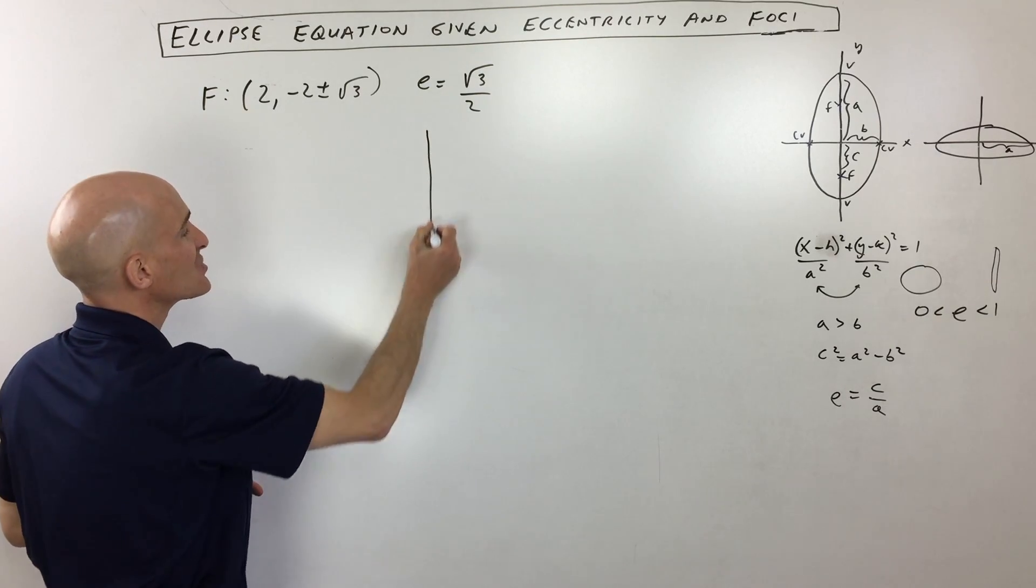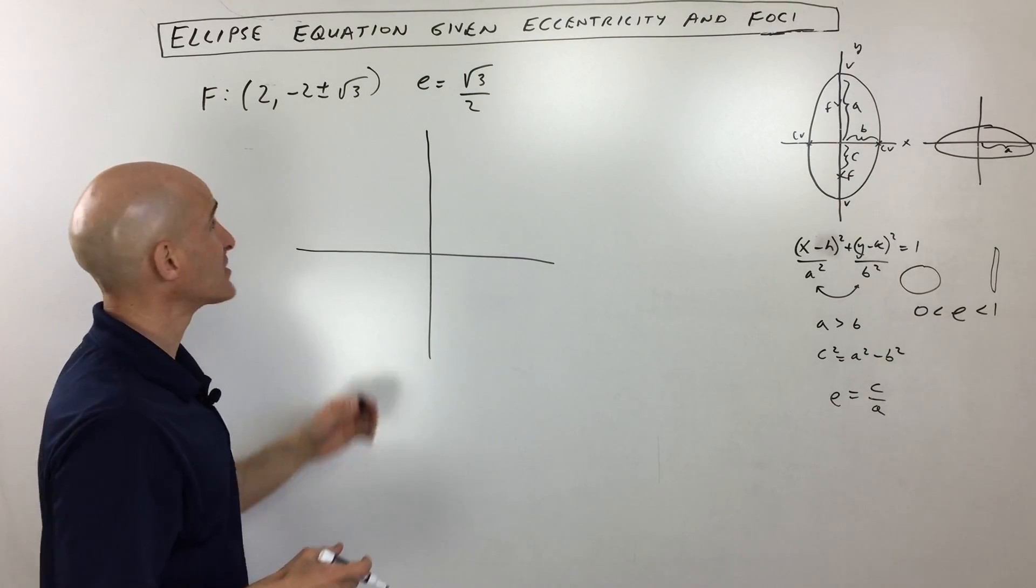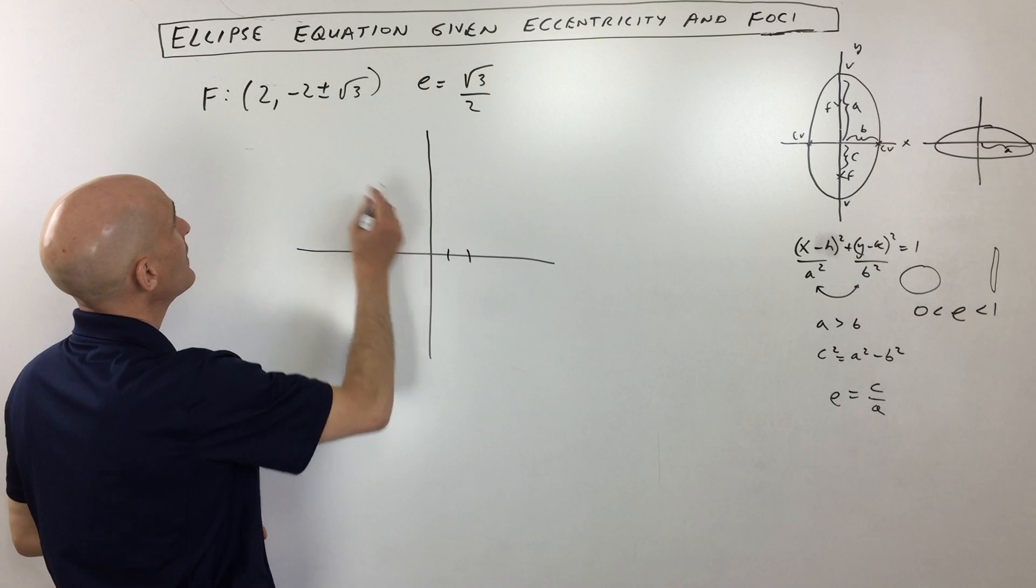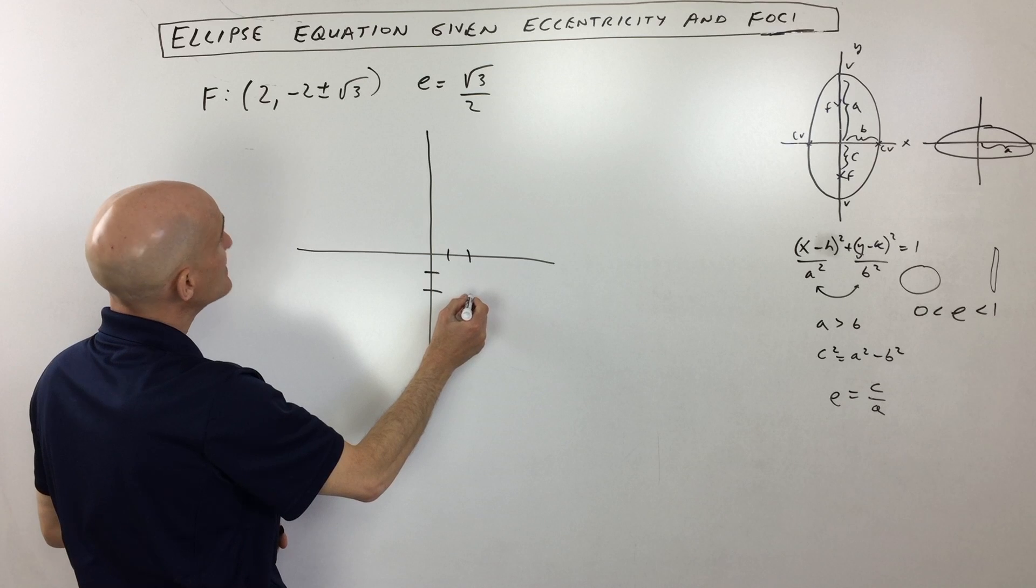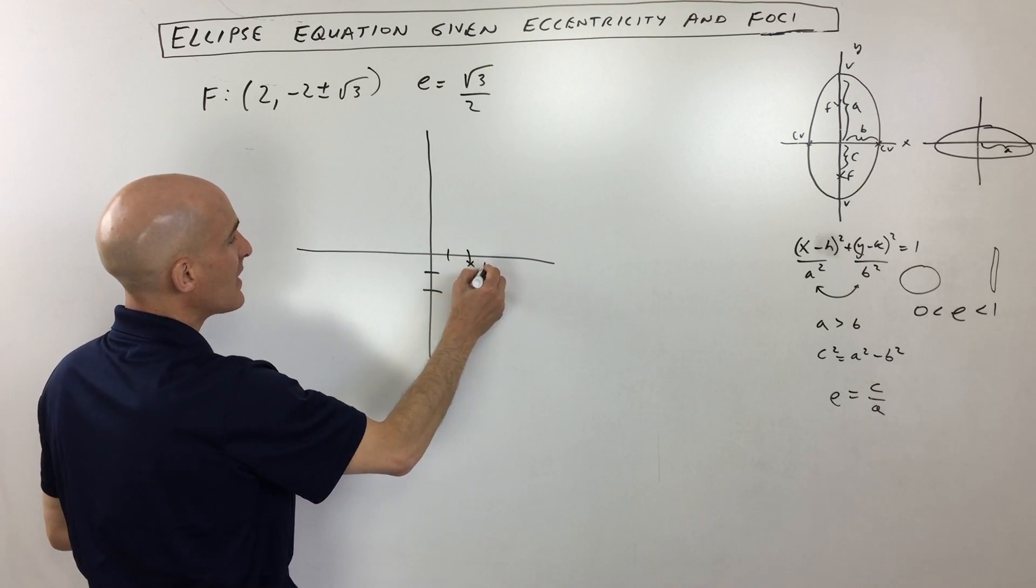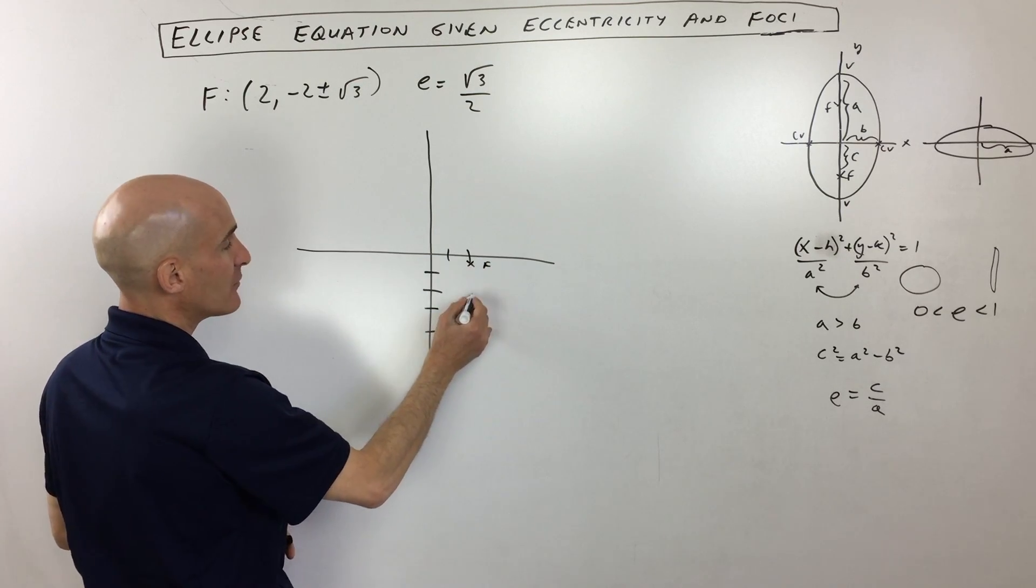The first thing I like to do is just kind of sketch it as I go along and piece the equation together also as I go along. They're giving us the foci, which are at positive 2, and then it's at negative 2 plus or minus square root of 3. So what that means is that from here, we're going up square root of 3, which is about 1.7, and down square root of 3, which is about 1.7 from there.